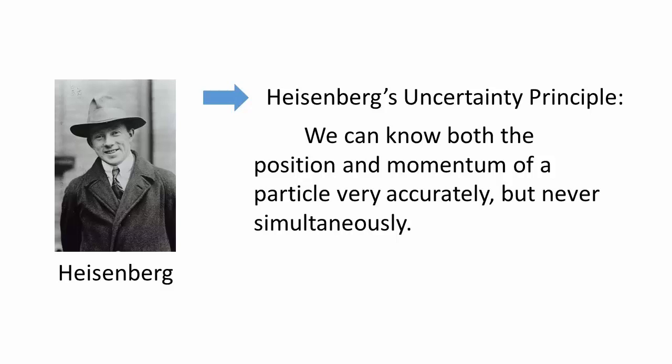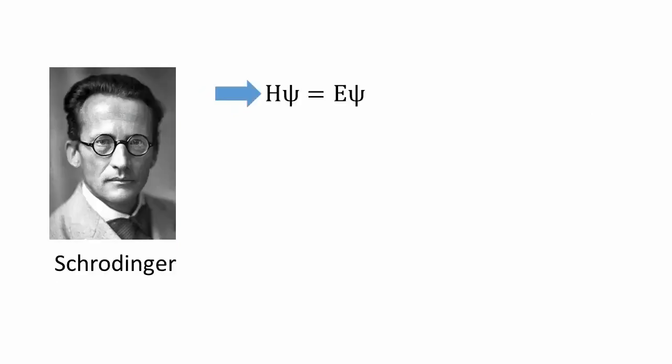To handle small systems, Schrödinger gave us his equation, Hψ equals Eψ, where H is the Hamiltonian operator, E is the numerical value of the system's energy, and ψ is the wave function.